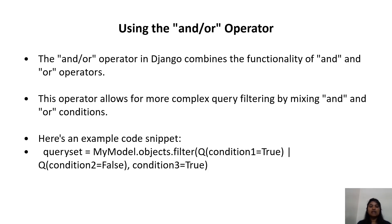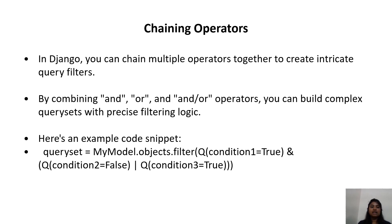Using the combined AND/OR operator in Django combines the functionality of AND and OR operators. This operator allows for more complex query filtering by mixing AND and OR conditions. Here is an example: query_set = MyModel.objects.filter(Q(condition1=True) | Q(condition2=False), condition3=True).